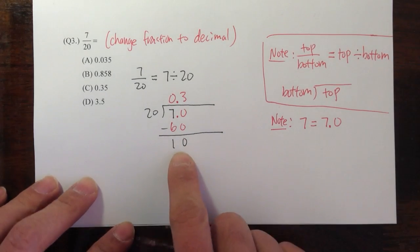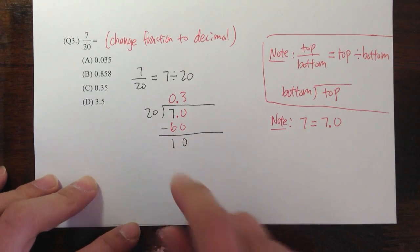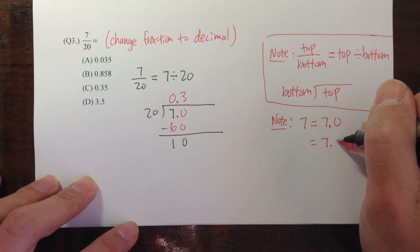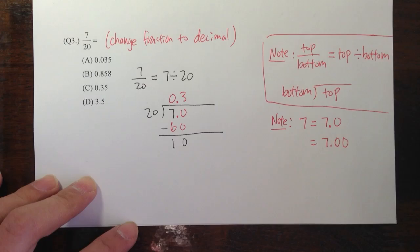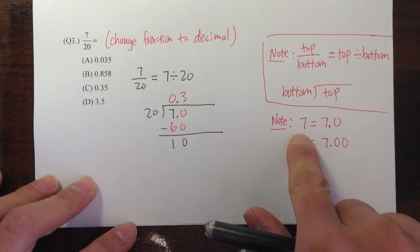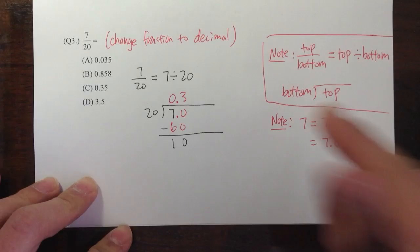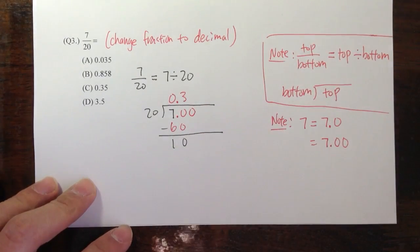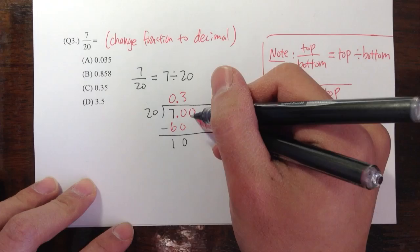But we have a remainder, right? So we can keep going. And to keep going, again, I can add as many zeros as I would like after the decimal point. So I can write 7.00, and that's actually the same as just the seven. Let me put the zeros right here.